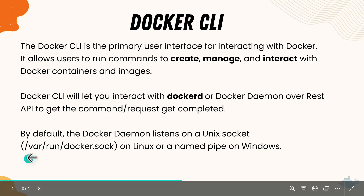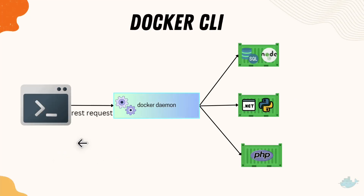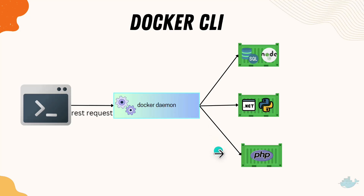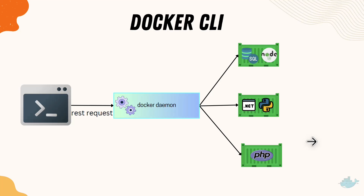The API default path to listen is /var/run/docker.sock. In a nutshell, this is how the diagrammatic view looks: you perform any operation from the Docker CLI, it sends a REST request to the Docker Daemon, and Docker Daemon does all the magic behind the scenes and brings up all the containers you're looking for.